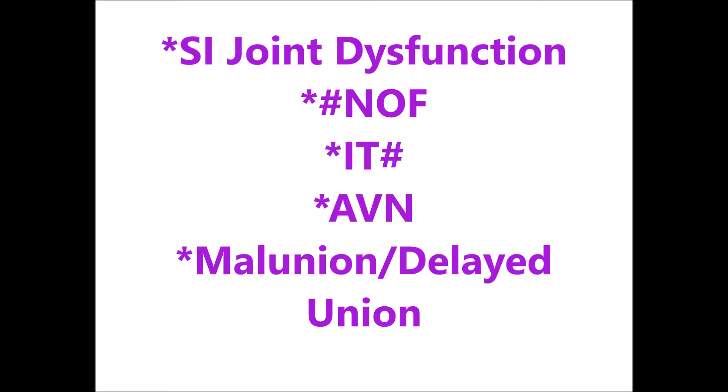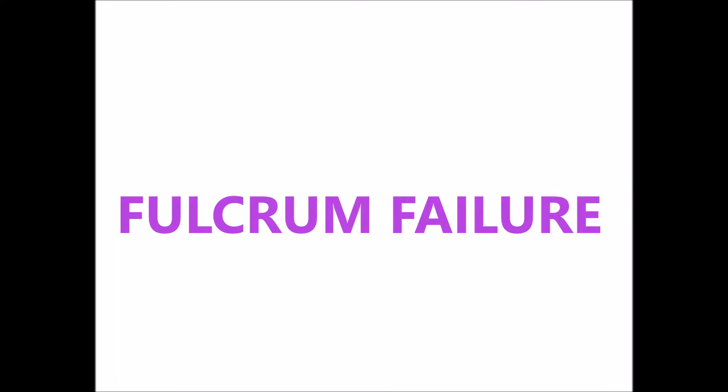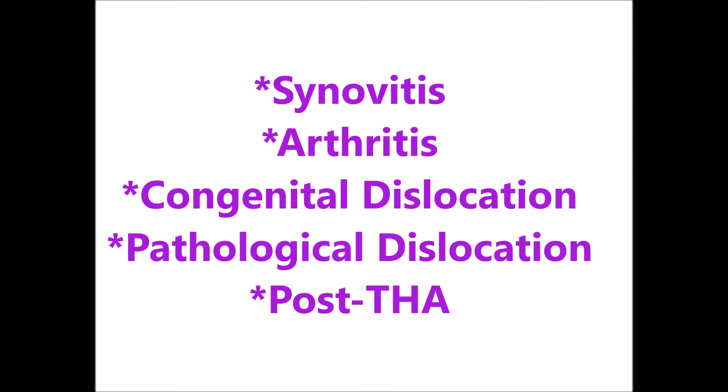There can also be a lever failure, such as due to sacroiliac joint dysfunction, neck of femur fracture, intertrochanteric fracture, avascular necrosis, or malunion and delayed union following an IT fracture or neck of femur fracture. Additionally, fulcrum failure may occur due to synovitis of the hip, arthritis of the hip, congenital dislocation of the hip, pathological dislocation of the hip, or following a total hip arthroplasty.